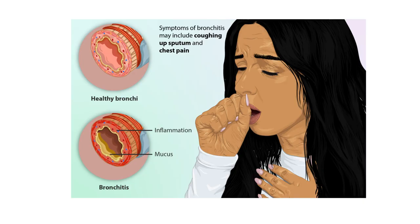This leads to structural changes in the airways and lung tissue, such as thickening due to the accumulation of collagen and other extracellular matrix proteins. COPD also causes damage to the epithelial cells lining the airways, making it difficult to clear mucus and other debris, which can further exacerbate airway obstruction. Enlarged mucus glands produce excess mucus, which can further narrow the airways and cause coughing and sputum production.